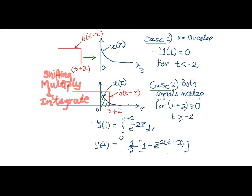This area will remain same for t plus 2 greater than or equal to 0. Thus, output y of t will be equal to integration from 0 to t plus 2 for e raised to minus 2 tau into amplitude 1 for h of t minus tau d tau.